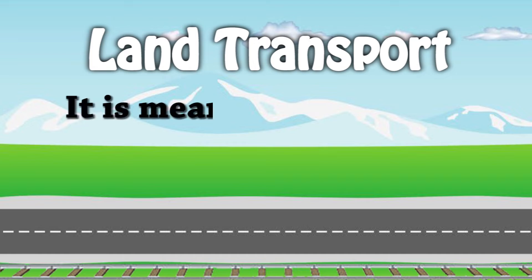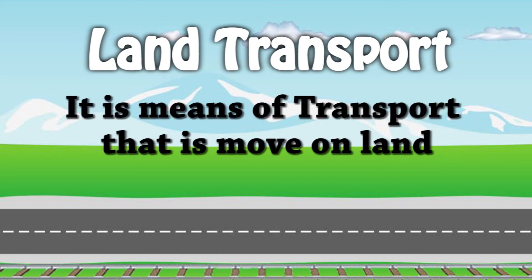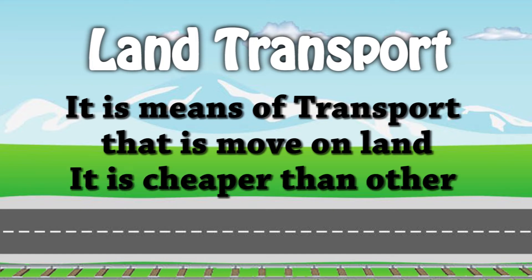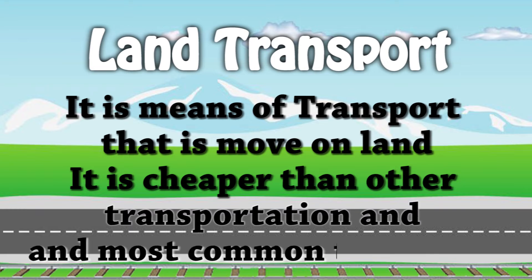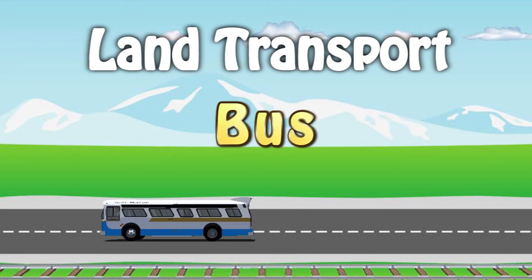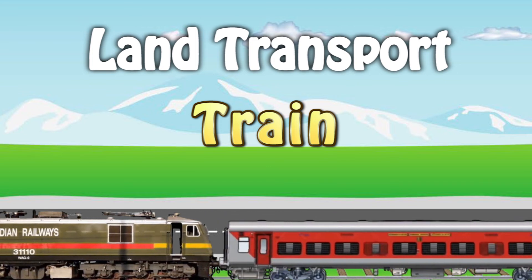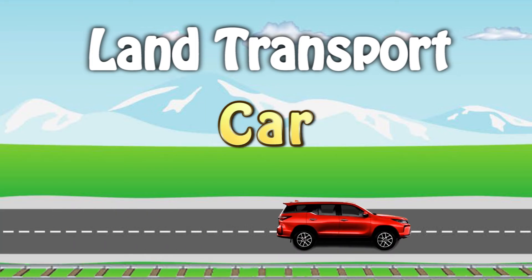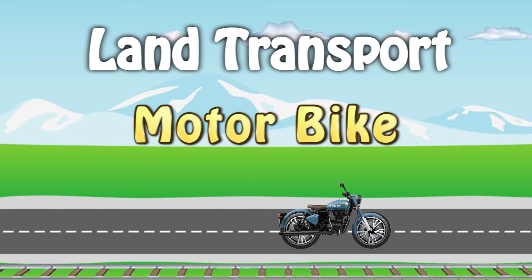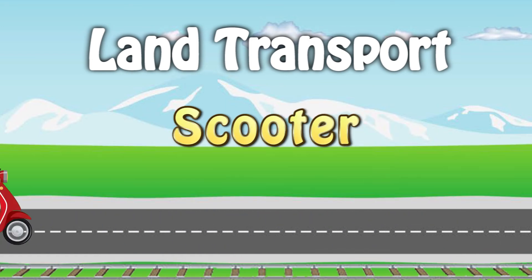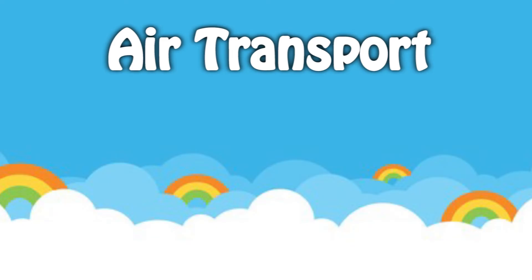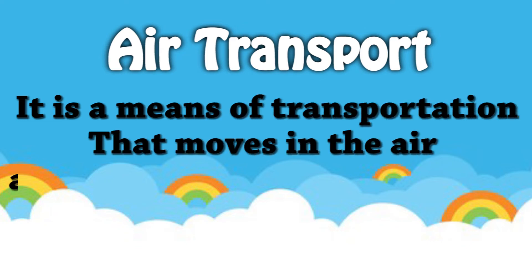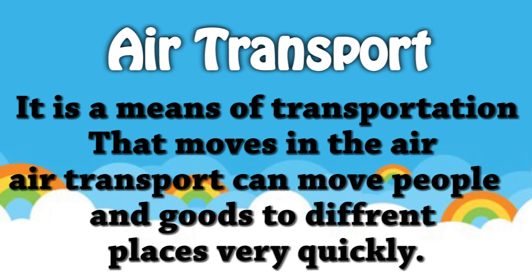Land transport is a means of transport that moves on land. It is cheaper than other transportation and the most common, with examples like bus, train, car, motorcycle, bicycle, and scooter.